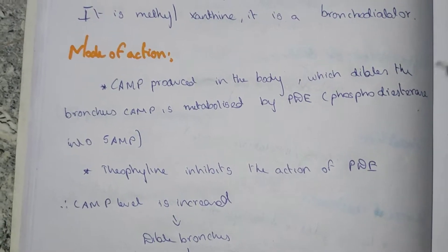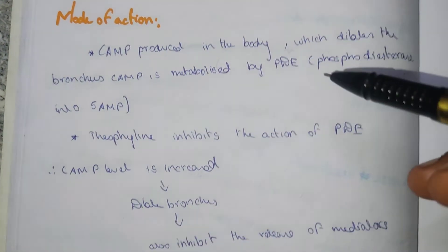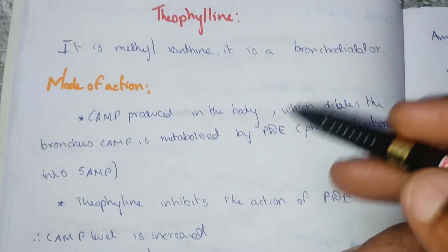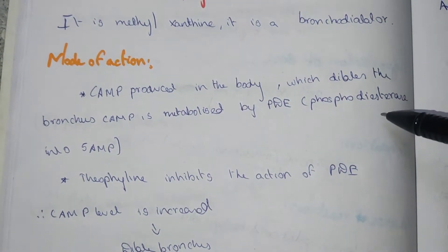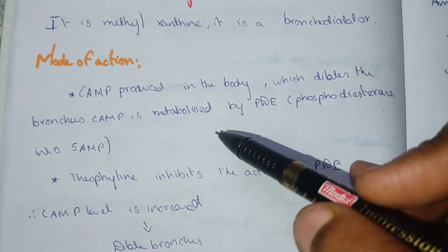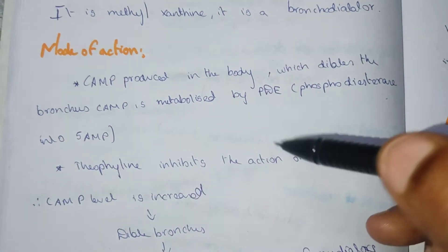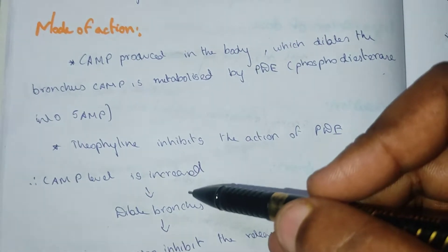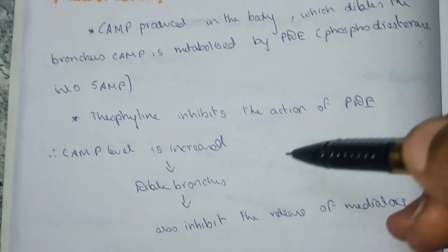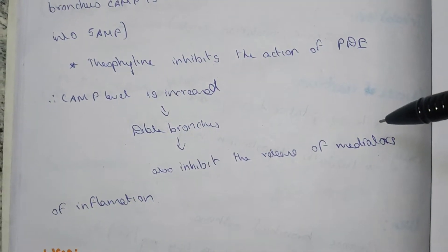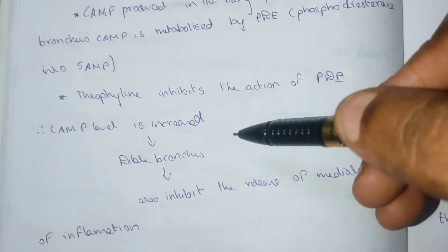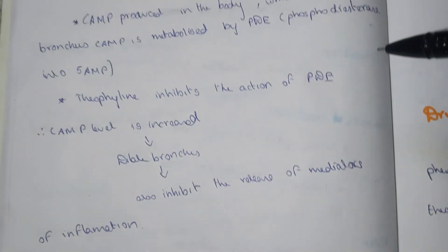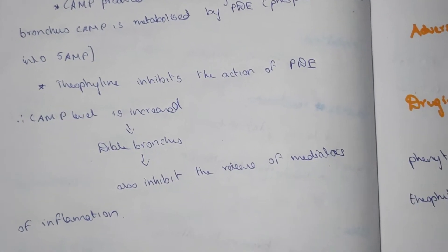The cAMP is metabolized by PDE (phosphodiesterase) into 5'-AMP. Theophylline inhibits the action of phosphodiesterase, so there is no metabolization of cAMP. This increases the cAMP level, and as cAMP level increases, the bronchus also dilates. It also inhibits the release of mediators of inflammation and does not produce any bronchial secretion. This is the action of theophylline over bronchial asthma.